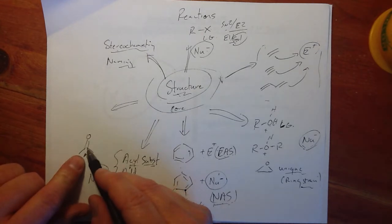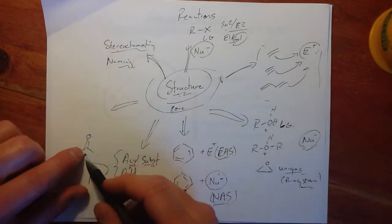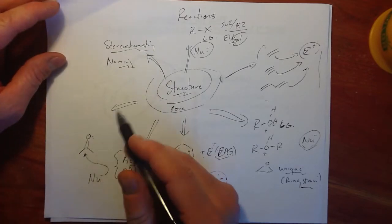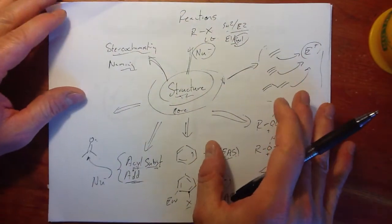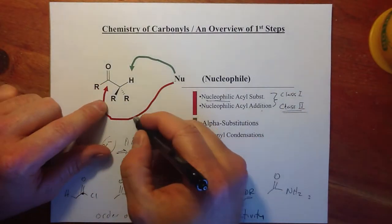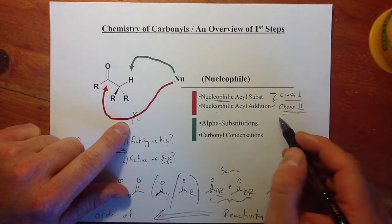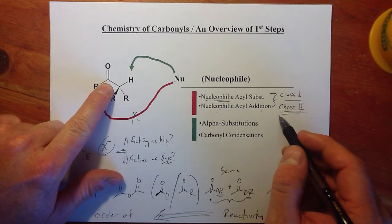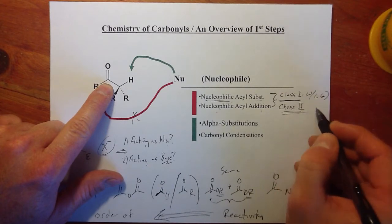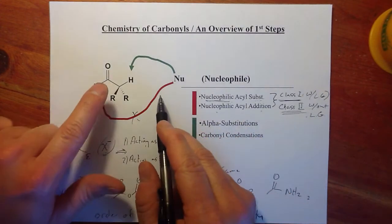They share this in common: at some point the nucleophile makes an attack on the carbon. It may be without protonation of the oxygen because the carbonyl is that reactive, or it may need to be protonated before the nucleophile can attack. Class 1 goes with acyl substitution with a leaving group, and Class 2 is without leaving group.